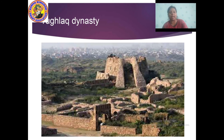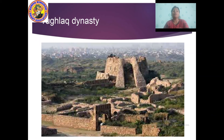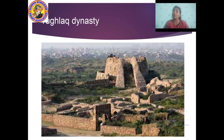After the Khilji dynasty, another dynasty that came into existence was the Tughlaq dynasty — among the most prominent dynasties of the Delhi Sultanate. In Delhi there is still a place named Tughlaqabad, which was the prominent area where the rulers of the Tughlaq dynasty used to reside.